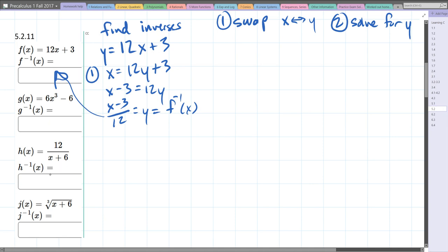For the second one, we have y = 6x³ - 6. Step one: swap x and y.